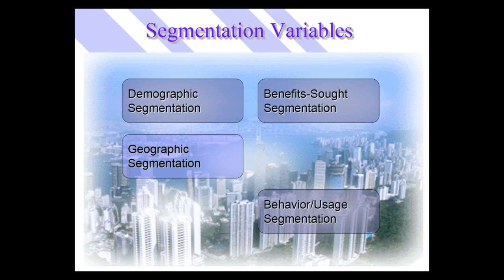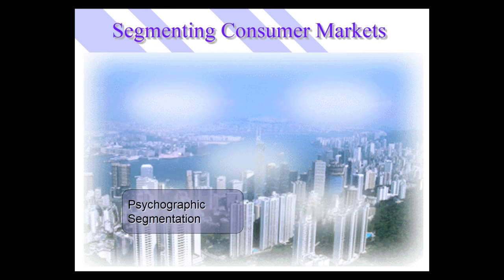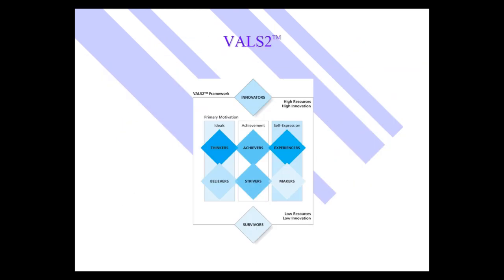One other segmentation variable is psychographic segmentation. Psychographics are the use of psychological, sociological, and anthropological factors to construct market segments. Members of psychographic segments typically have similar interests and opinions. It was the VALS system, created by the Stanford Research Institute, that broke this into categories. The original VALS came out in the late '70s, and VALS II in the 1990s. VALS II breaks U.S. consumers into eight unique groups: innovators, thinkers, achievers, experiencers, believers, strivers, makers, and survivors.